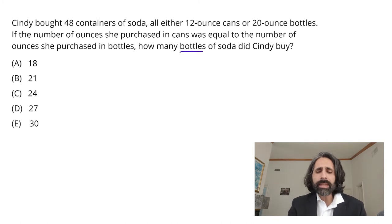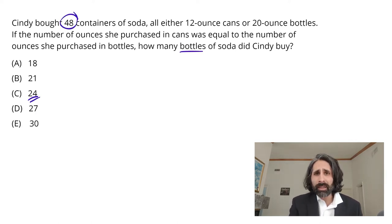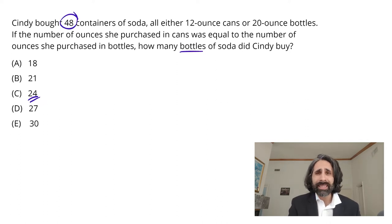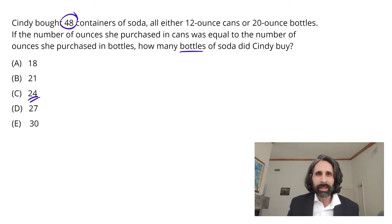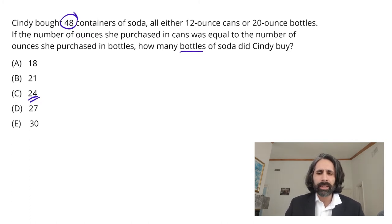Looking at these answers, one of the things that might jump out at you is right here in the middle: 24. Now 24 is a special number in this problem because when we consider it in the context of 48 containers of soda, 24 bottles would imply 24 cans — a 50-50 split. Could that actually be what's happening here? Probably not. Looking at that middle sentence, the number of ounces purchased in cans is supposed to equal the number of ounces purchased in bottles. How are you going to do that if you have the same number of both, and bottles have so many more ounces each than cans do? It would never work out.